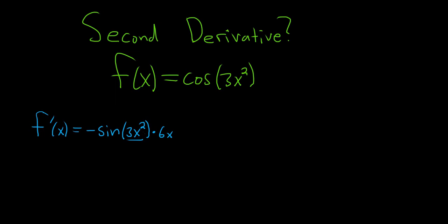The derivative of cosine is negative sine. So you take the derivative, you leave the inside piece untouched, and then you multiply by the derivative of the inside, and that gives you 6x. So this is equal to negative 6x sine of 3x squared. That is the first derivative.